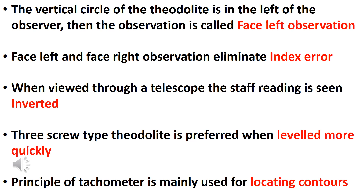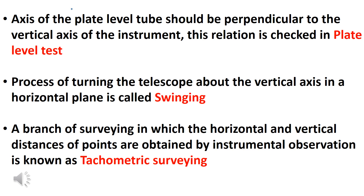The principle of tachyometry is mainly used for locating contours. The axis of the plate level tube should be perpendicular to the vertical axis of the instrument. This relation is checked in the plate level test.